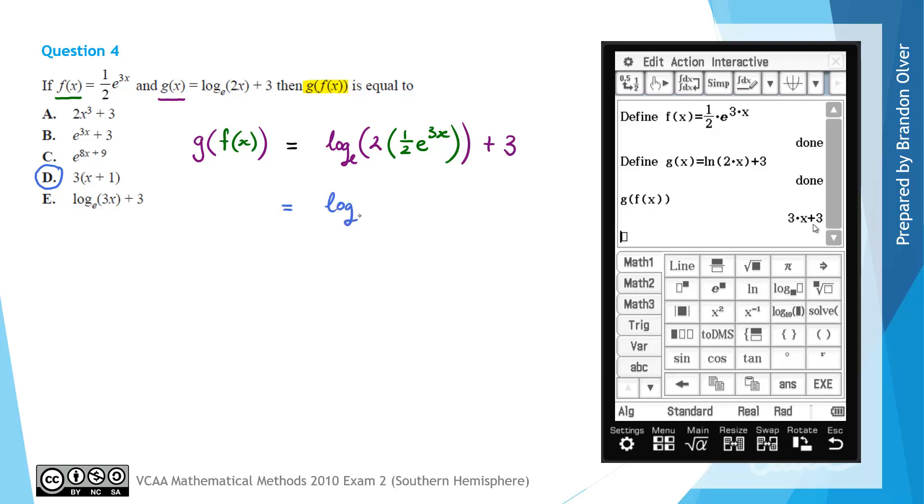So we'll still have log e, but 2 times a half will cancel that out. So that'll just be 1 e to the power of 3x. So we'll have log e of e to the power of 3x plus 3. And then one of our log laws would say that if we have a power, we can bring that out the front as a coefficient. So we'll have 3x log e of e plus 3.